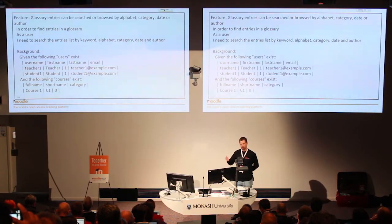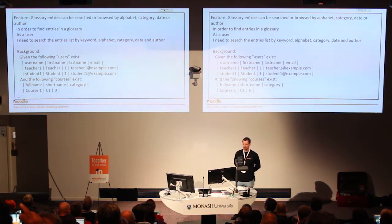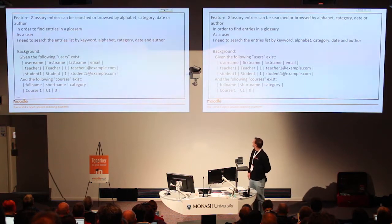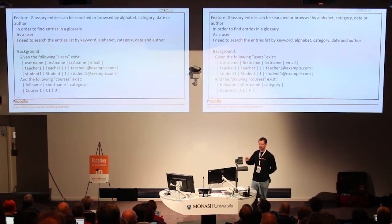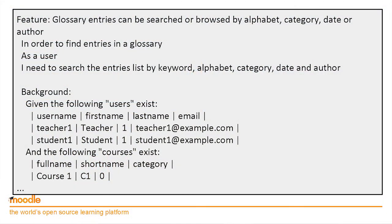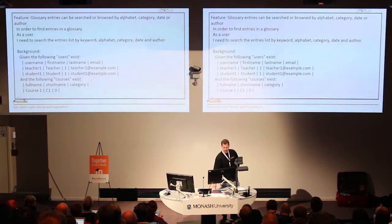It doesn't have to be the developers that write the Behat tests. In this particular example, we have a feature — every feature is basically one thing that we're testing. In a change control process, that could include an ID number for a change request. The first section is just informative, so the text in there could be anything you like, but you'll appreciate including enough detail to understand what the test is about — not how it works, just what the change is that you're testing. Then you have a background section which, from a clean Moodle install, creates the courses, users, and activities you need. It uses a shortcut syntax, so it doesn't quite look like English, but once you get used to Behat you'll want to use the shortcuts.